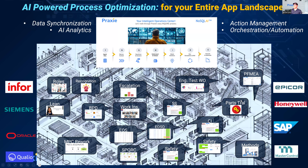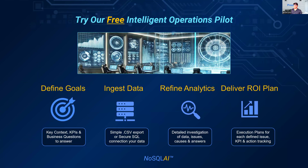These process optimizations can be layered on top of your environment, no matter which companies you have at those bottom two layers — whether the ERP and your execution layer. If you're interested, we have a free intelligent operations pilot that uses AI across these optimization layers. We define the goals, ingest the data, refine the analytics, and show you ROI, regardless of what your issues are — whether those are in manufacturing analysis, risk analysis, quality, pricing, et cetera.